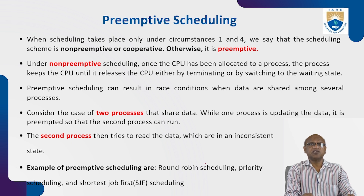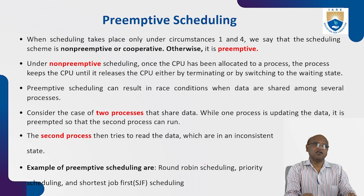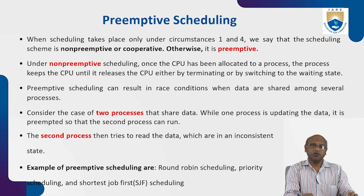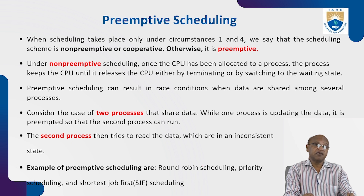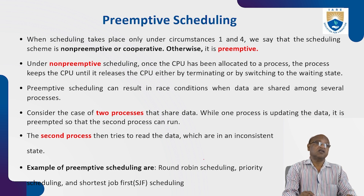Round robin scheduling, priority scheduling, and shortest job first scheduling are examples of preemptive scheduling algorithms — preemptive means you can forcefully stop the CPU and allocate the high-priority job. These scheduling algorithms are available to ensure smooth execution of processes.